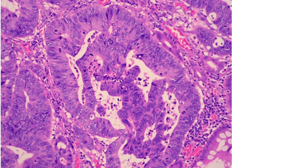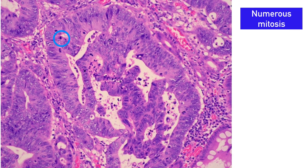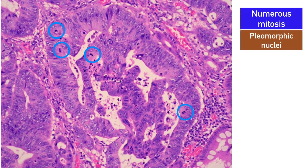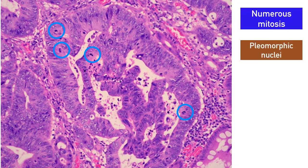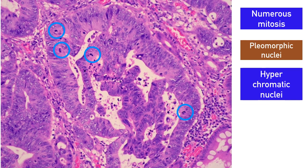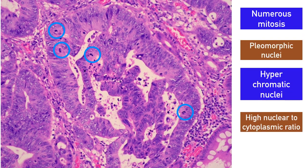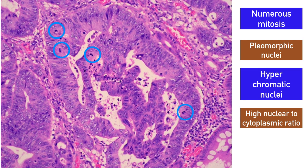At the highest magnification, you can describe the presence of numerous mitoses within the tumor cells, because the tumor cells are actively dividing. The cells have pleomorphic nuclei with various sizes and shapes, with hyperchromatic nuclei showing increased blue coloration of the nuclei due to the coarse chromatin within.